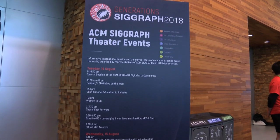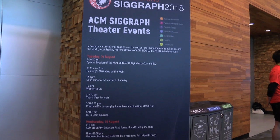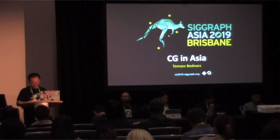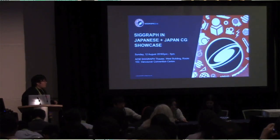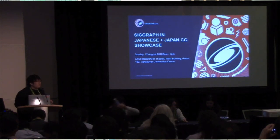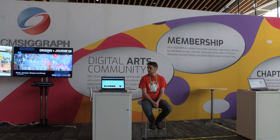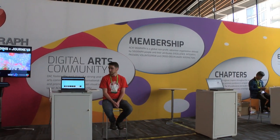The ACM SIGGRAPH Theatre is the place where all sessions with an international focus happen during the conference. This year we have curated sessions including CG in Australasia, CG in Asia, a Japanese overview of SIGGRAPH 2018 with simultaneous translation into Japanese, CG in Latin America, sessions from other ACM SIGGRAPH standing committees, chapters, and the digital arts community, and Birds of a Feather sessions with an international focus.